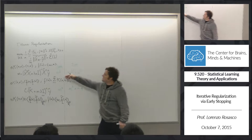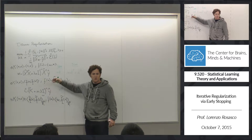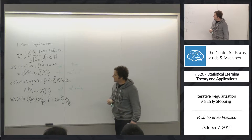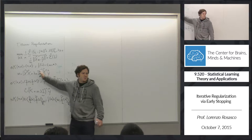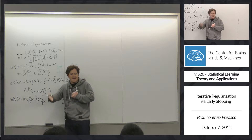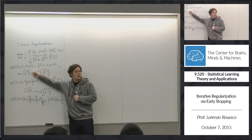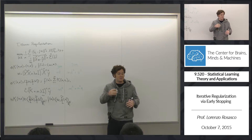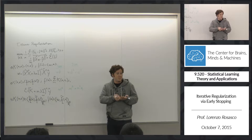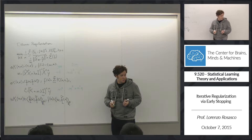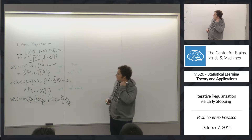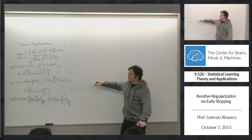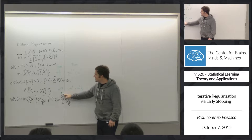Typically, you don't want to invert the matrix — you want to go straight to solving the linear system. Rather than using the inverse function and then applying the matrix, you use something like MATLAB's backslash, which exploits the fact that you have a linear system to solve rather than just a matrix inversion.